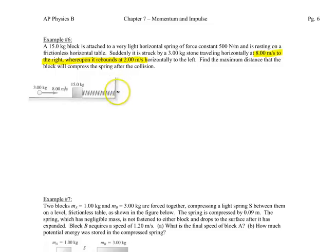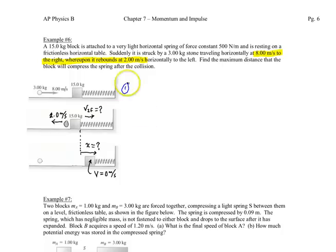So I would draw two more pictures. We'll call this picture number one, and let's draw two more below it. This is the picture just after the collision, picture two. The block is moving to the right because it's been struck by the stone, and the stone is moving backwards at two meters per second.